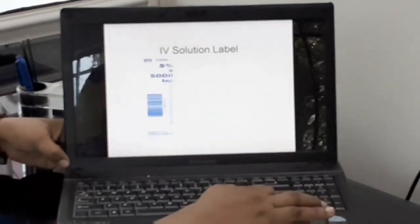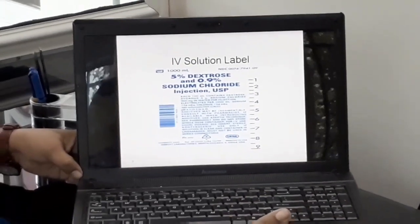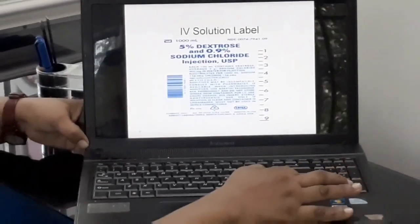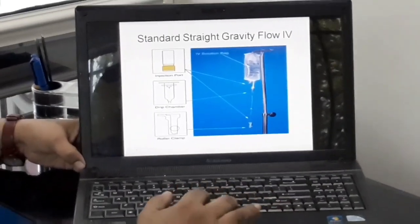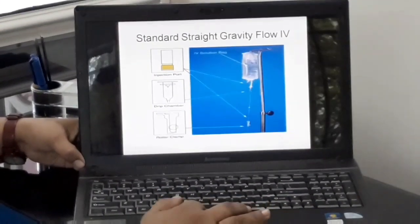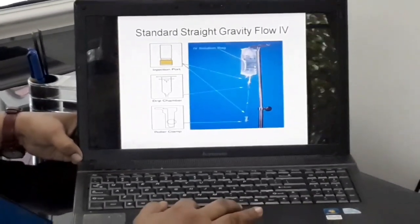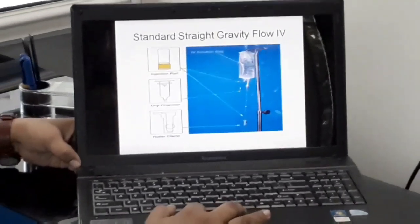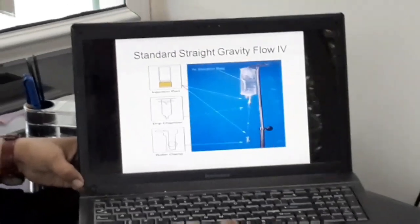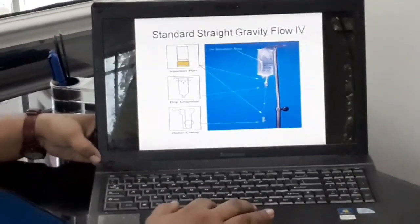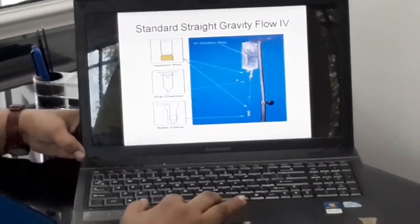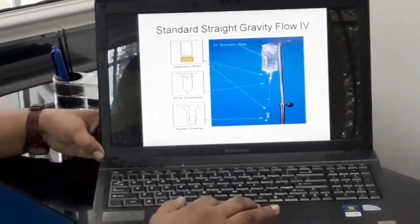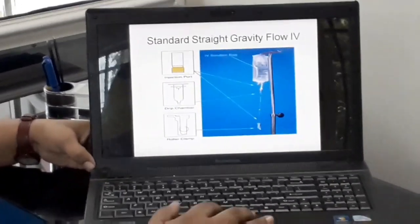The label comes like this with 5% dextrose and 0.9% sodium chloride. When you are giving the solution by gravity, you can see the different ports. This is the solution and here there is an injection port. This is the drop chamber where the drops are going per minute that we are adjusting, and here is the roller clamp where we are adjusting the rate.